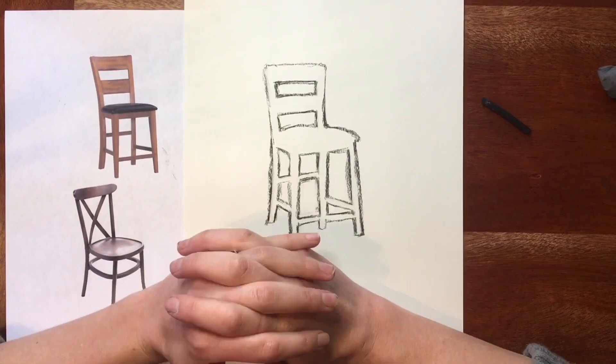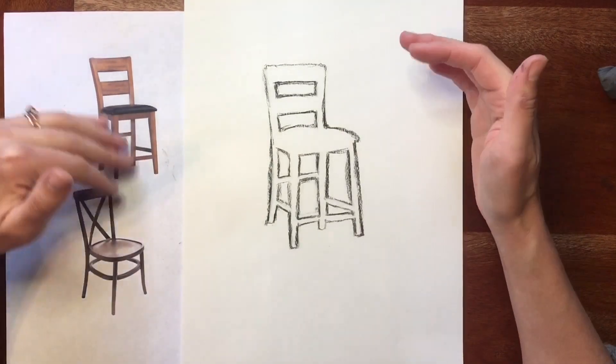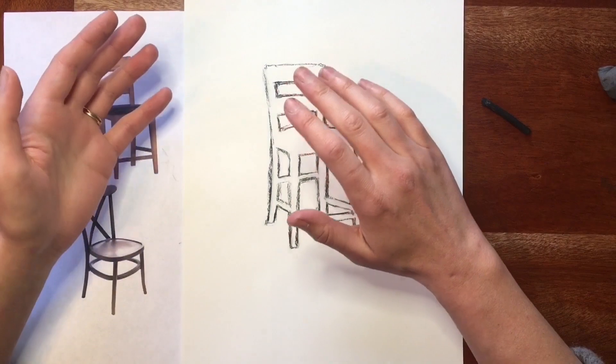And I have one little piece of extra credit for you if you would like. After you've finished your negative space drawing, go ahead and try drawing the chair in positive space, drawing the chair itself, and just see how it feels. See what you think of the difference between those two perspectives.